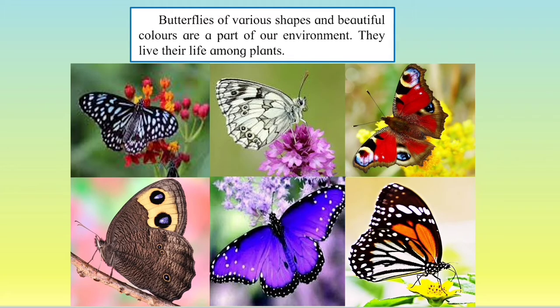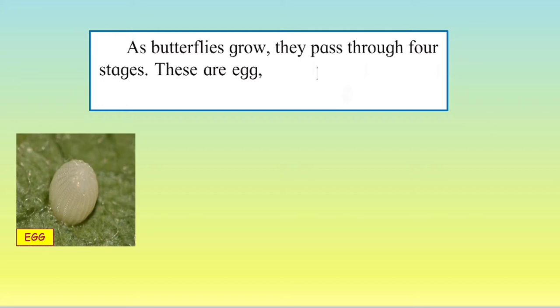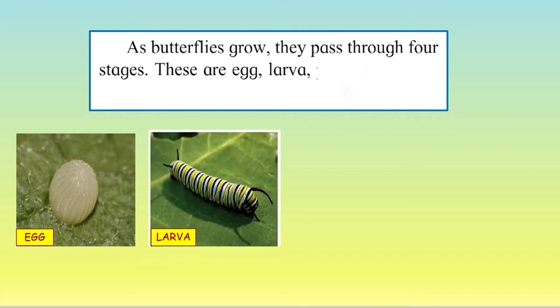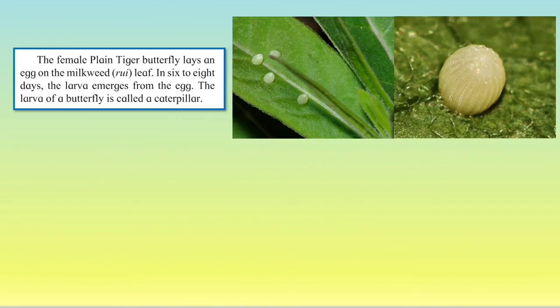Butterflies of various shapes and beautiful colours are part of our environment. They live their lives among plants. You can see the beautiful colours and patterns on the butterflies. As butterflies grow, they pass through four stages: the egg — you can see the pearl-like egg of the butterfly — the larva, the pupa, and the adult butterfly. The female plain tiger butterfly lays an egg on the milkweed or the rooey leaf.